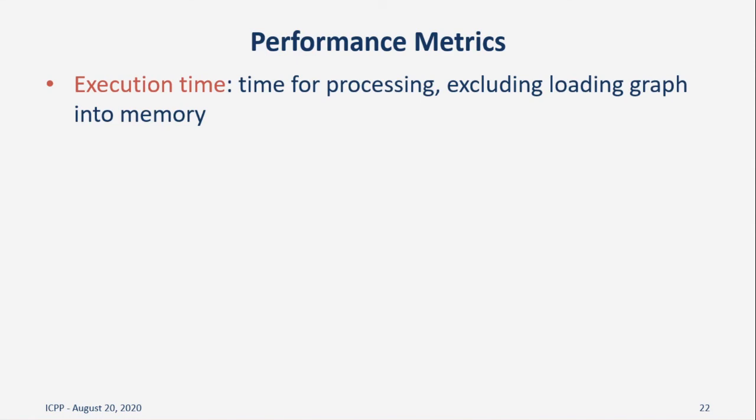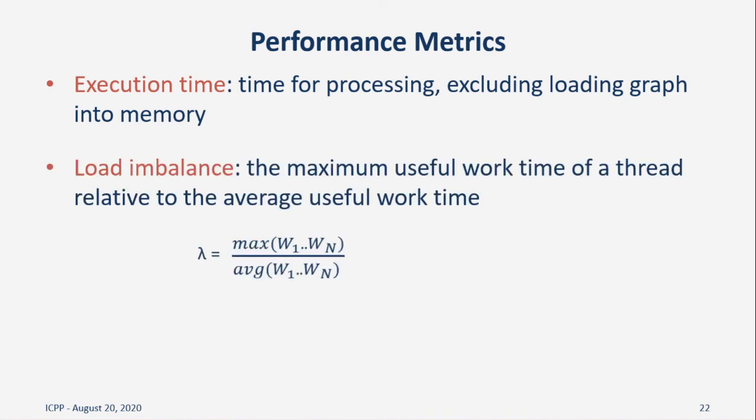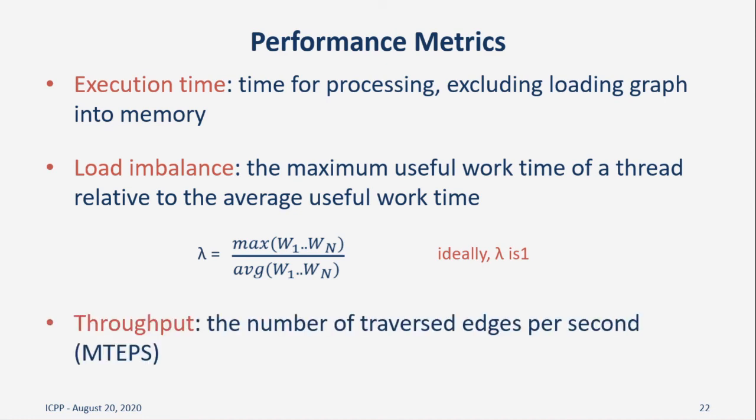We use a number of performance metrics to evaluate our design. First and foremost is execution time, which we measure as all of the graph processing time, excluding the time it takes to load the graphs into memory. Next, we have our metric for capturing load balance, which we refer to as lambda. Lambda is the ratio of the maximum useful work performed by a thread compared to the average useful work performed by a thread. The higher the lambda value, the more load imbalance is present, and in the ideal case it is equal to one. Finally, there is graph processing throughput, measured in the number of traversed edges per second, or MTEPs, a commonly used metric to compare graph processing throughput across different platforms and implementations.